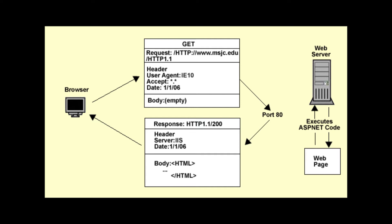If it is a webpage that is being requested, the web browser takes the code it has received from the web server and compiles a viewable page from it. The web browser is referred to as the client or user agent in this interaction, and the whole interaction is a client-server relationship. The message sent from the web browser to the web server is formatted using communication standards set forth by the Hypertext Transfer Protocol as defined in RFC 2616. HTTP is the protocol used by web servers to receive and respond to web browser's requests for data.